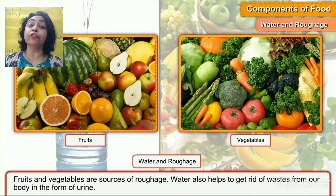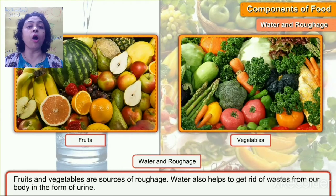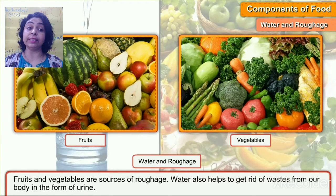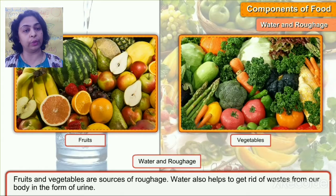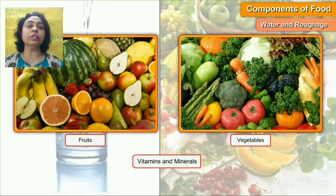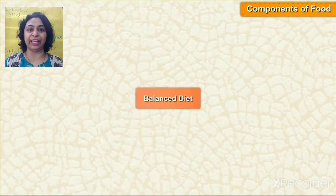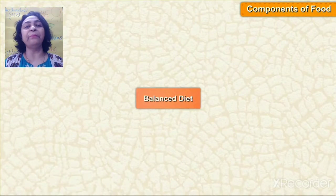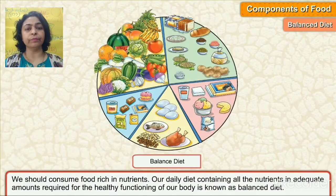Fruits and vegetables are sources of roughage. Water also helps to get rid of waste from our body in the form of urine. So you can see fruits and vegetables are very good for us.